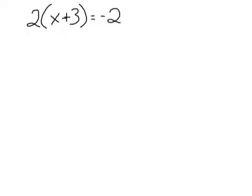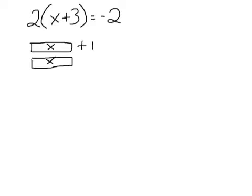I'm going to draw my long rectangle, so I have X, and then I should have a second X because I have 2 times X plus 3. That's my 2 groups of X taken care of. Now I also have to take care of this plus 3 — I have 2 groups of positive 3, so I'm just going to draw little plus signs. So I have 2 groups of positive 3.